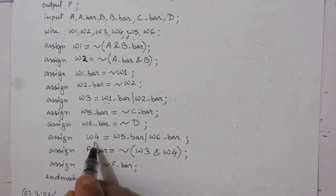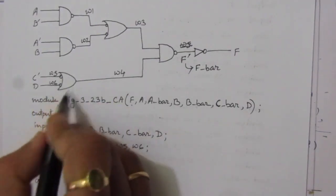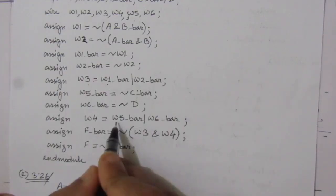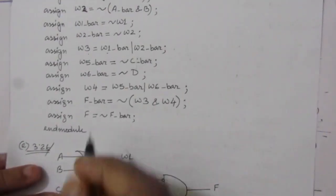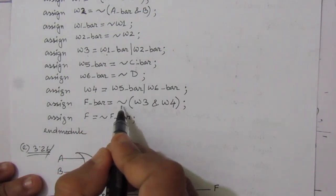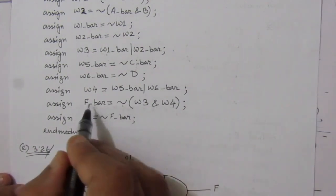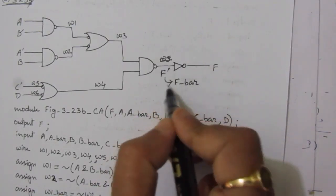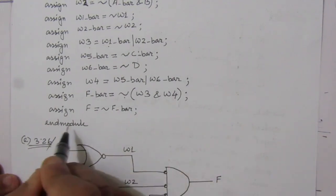W4 is the OR operation between W5-bar and W6-bar. F-bar is the NAND operation between W3 and W4: assign F-bar = NOT (W3 AND W4). Finally, F is the complement of F-bar because we have only a NOT gate at the output: assign F = NOT F-bar. Then we write endmodule.